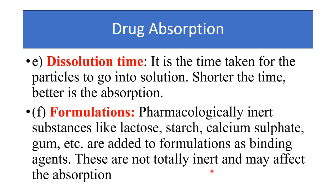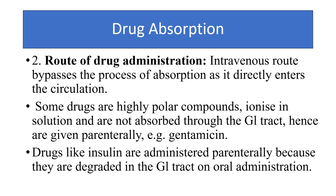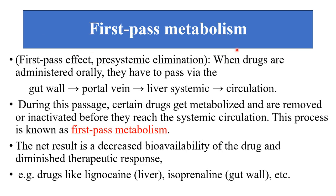Regarding route of drug administration: the intravenous route bypasses the process of absorption and drug directly reaches the systemic circulation. Some drugs are highly polar compounds, ionized in solution, and not absorbed through the gastrointestinal tract — hence they are given parenterally. For example, gentamicin is given parenterally, and insulin is administered parenterally because it is degraded by intestinal enzymes and should not be given orally.